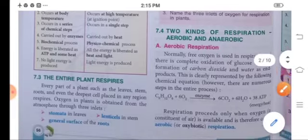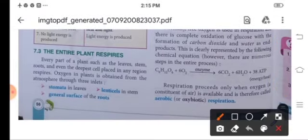Now come to the plant. Oxygen, as you know children, the entire plant respires, like the leaves, stem, roots, and even the deepest cells which are placed in any region, they respire. Oxygen in plant is obtained from the atmosphere through three different inlets: like stomata in leaves, lenticels, and general surfaces of the leaf.